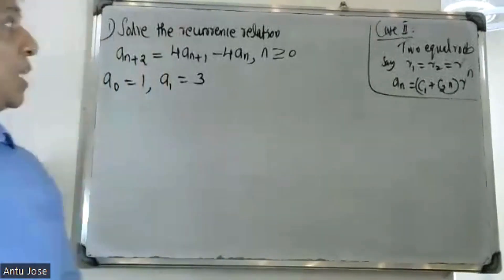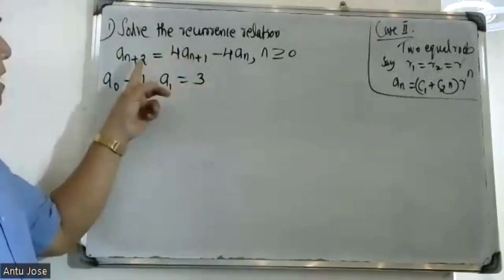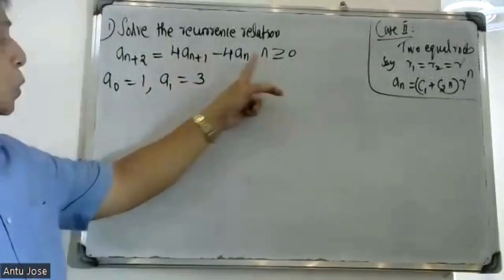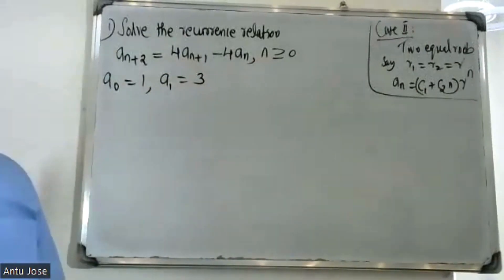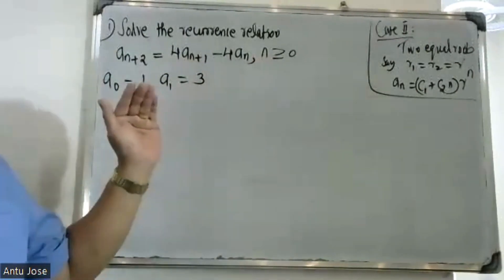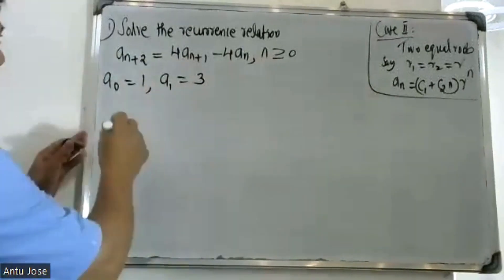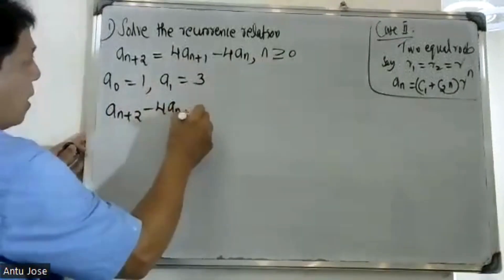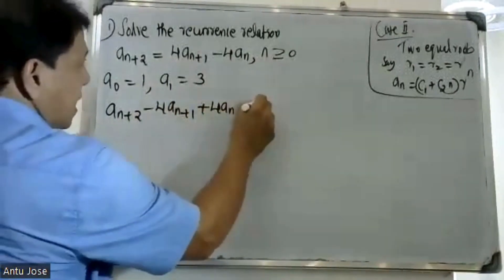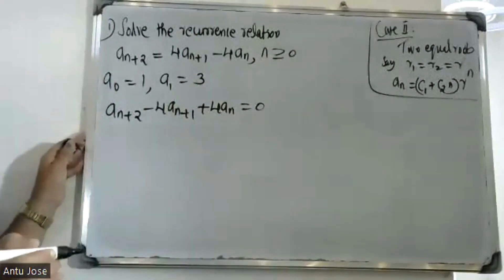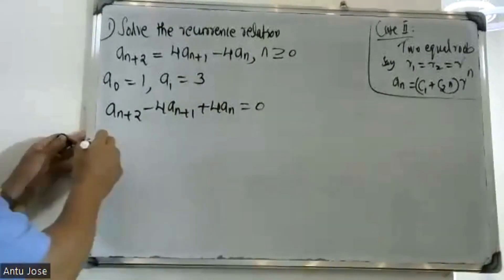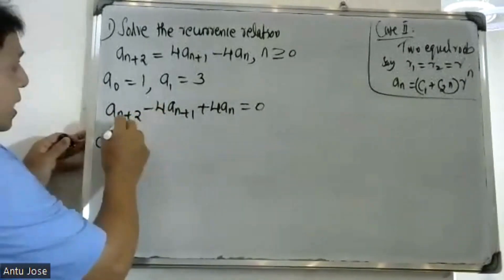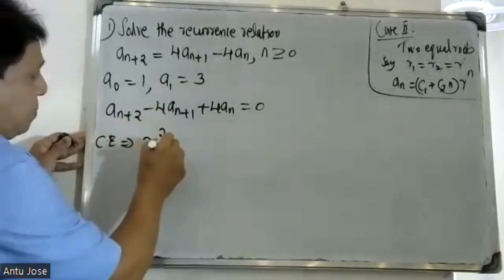Good morning students. Consider the recurrence relation a(n+2) - 4·a(n+1) + 4·a(n) = 0, where n is greater than or equal to zero. The initial conditions are a(0) = 1 and a(1) = 3. This is a second-order recurrence relation.